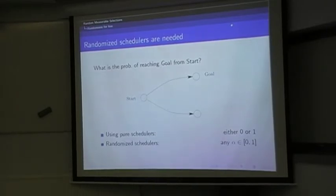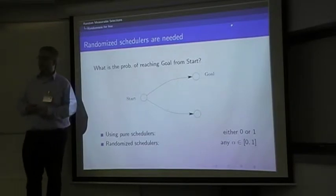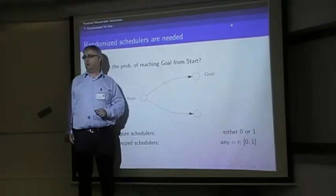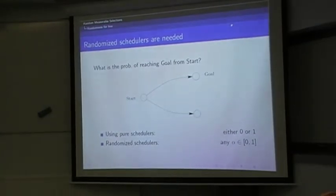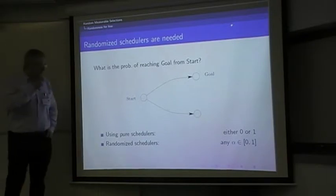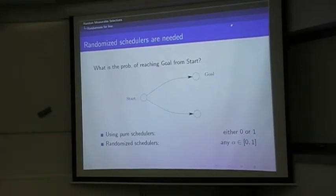On the other hand, if you use randomized schedulers, well, you can reach goal with any fixed probability between zero and one. So if you might want to reach goal with probability one-third, well I would use randomized schedulers that choose the upper transition with probability one-third. In particular, they differ because if you look at the set of probabilities of reaching goal that you can have when varying schedulers, you're using pure schedulers, you can only have zero or one as values, and with randomized schedulers, you get all the possible real numbers between zero and one. However, you can notice something, which is that the value you can reach with a randomized scheduler is always between the values that you can reach with pure schedulers. Pure schedulers bound randomized schedulers.